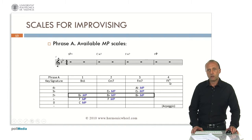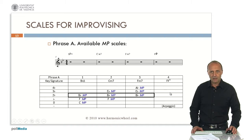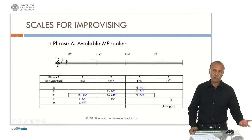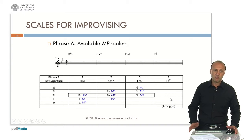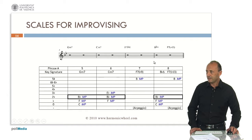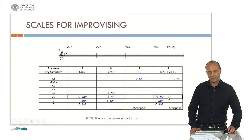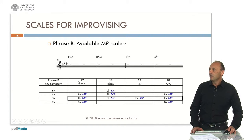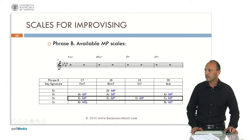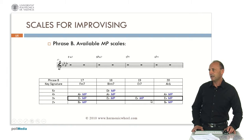We could expect this because the key signature has two flats, so we can expect that Bb major or Bb major pentatonic is a suitable scale for improvising. Here we have a diminished chord for which we don't have a major pentatonic available scale. So in this case we can choose any different scale, or we can play just the notes of the chord — the arpeggio — or only one note of the chord, or simply we don't play anything. We don't need to play all the time when improvising. Let's see the other four bars in the A phrase. Here we have the chords and the available scales for improvising. We can see that the Bb major pentatonic scale is suitable for improvising on phrase A.